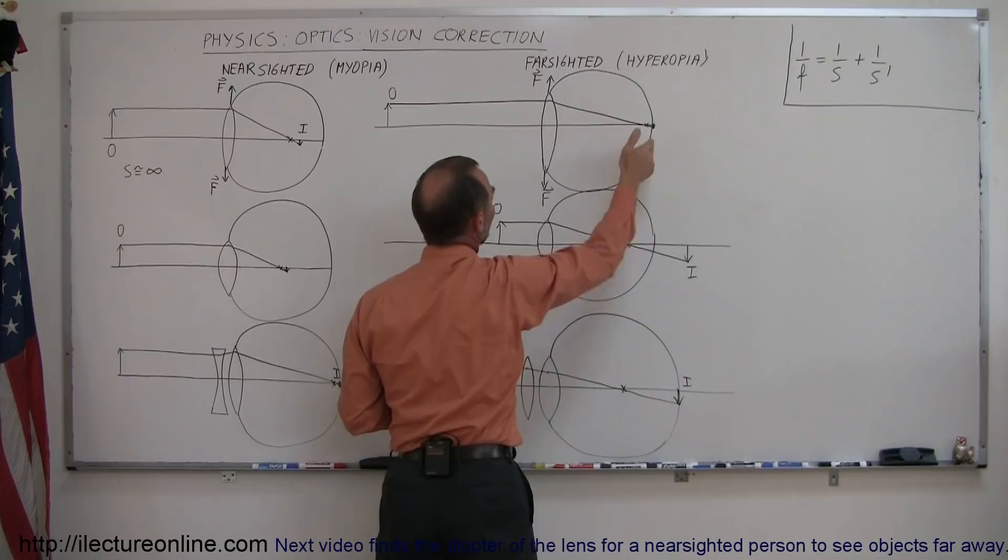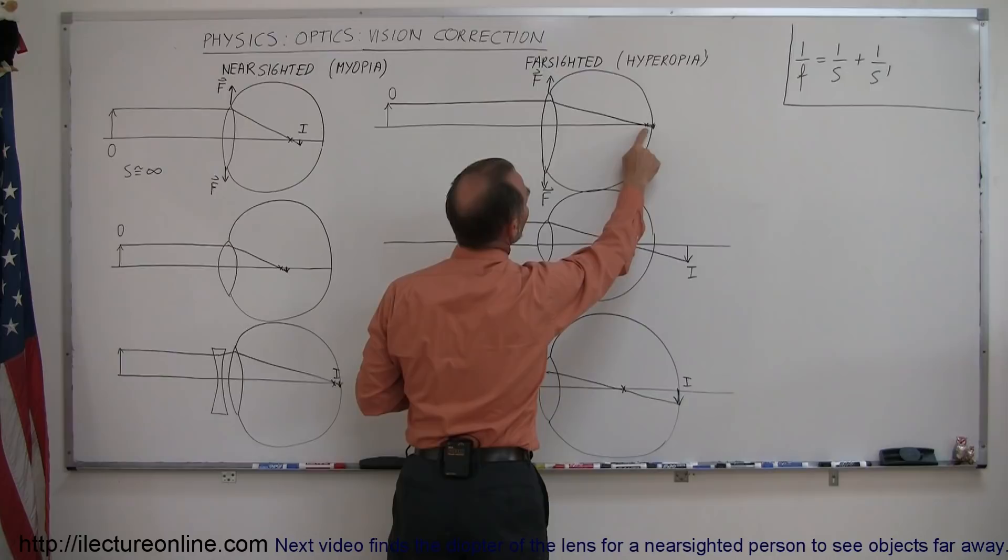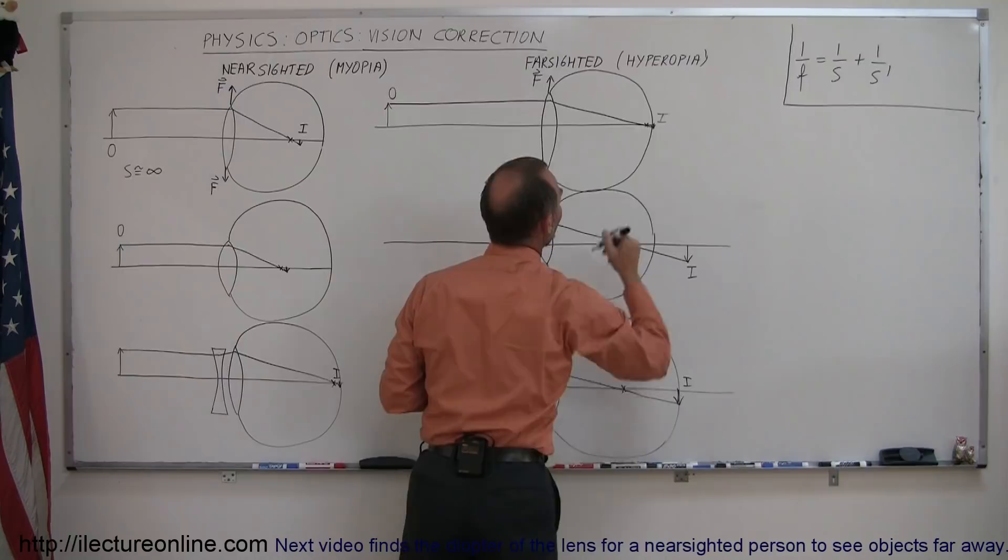the focal point falls far enough back, so an image is formed right there. The image is formed which is right past the focal point and right on the retina, so no problems. A farsighted person sees far clearly.